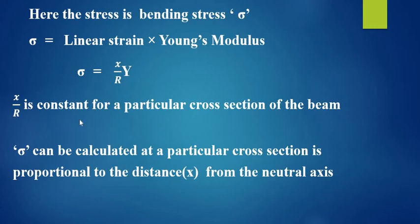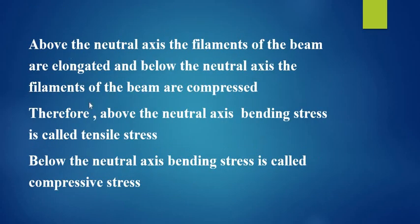Here, x by R is constant for a particular cross-section of the beam. Therefore, bending stress calculated at a particular cross-section is proportional to the distance from the neutral axis. Above the neutral axis, the filaments of the beam are elongated, and below the neutral axis, the filaments of the beam are compressed.